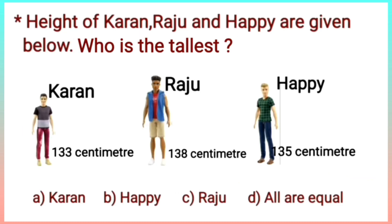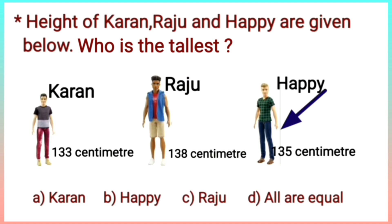Next question: the heights of Karan, Raju, and Happy are given below. Which of them has the greatest height? We have been given the heights of 3 boys, and after comparing their heights, we will find the correct option. The height of Karan is 133 centimetres, height of Raju is 138 centimetres, and that of Happy is 135 centimetres. When we compare their heights, it is very clear that the height of Raju is the greatest.